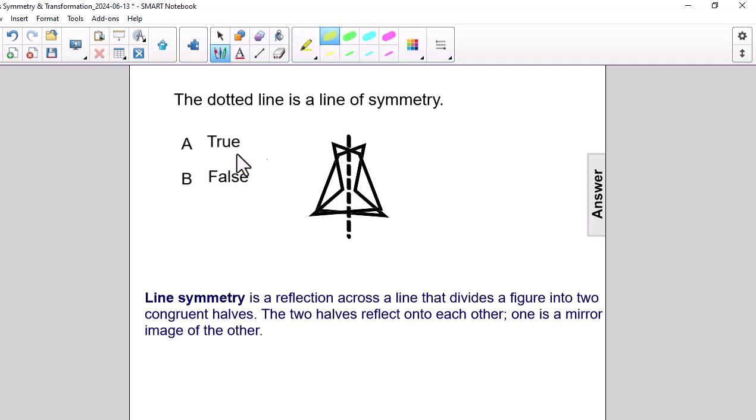Therefore, this dotted line is not a line of symmetry. The answer is false. The correct answer is B.